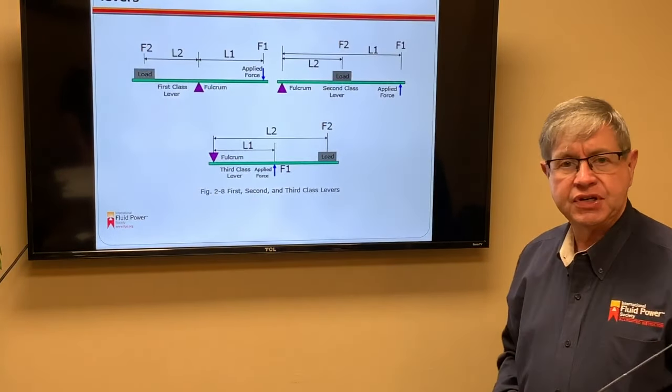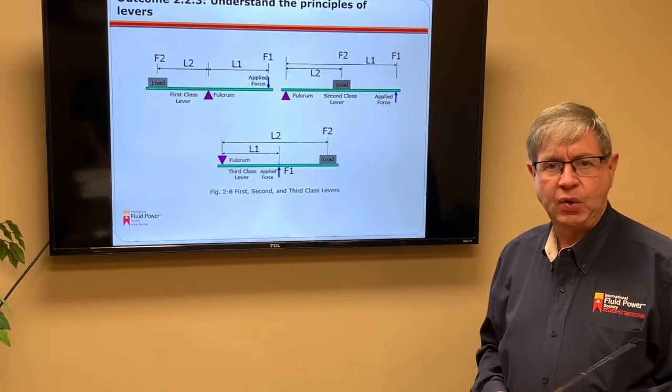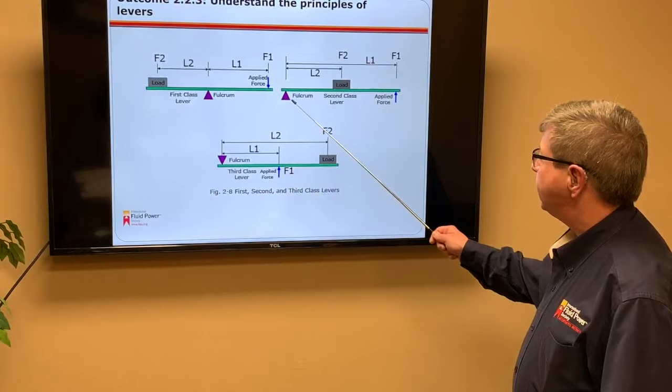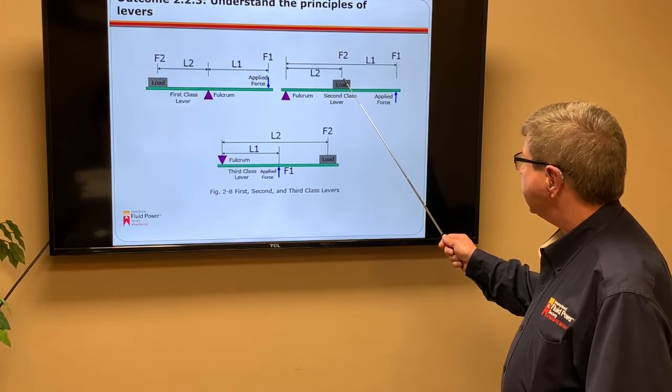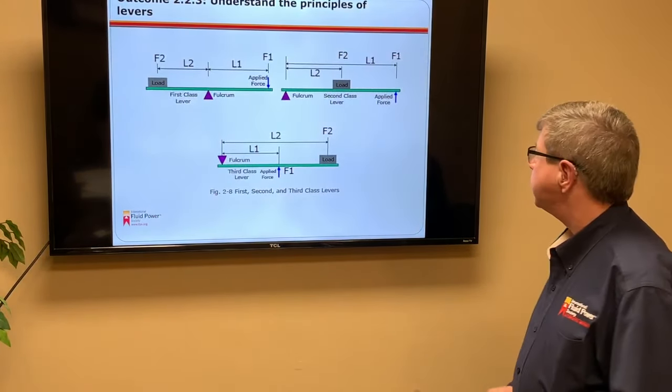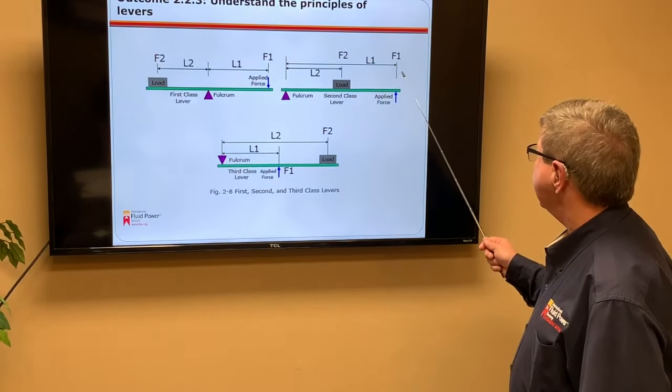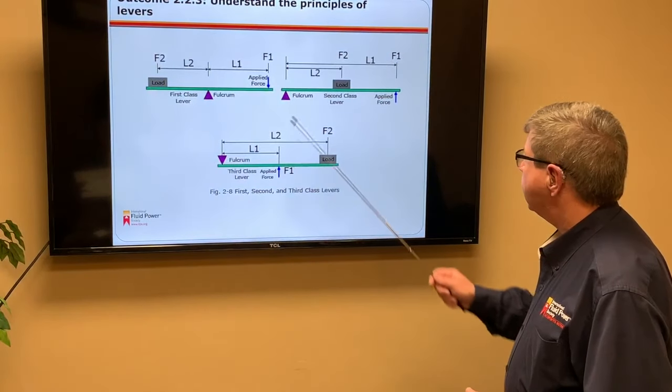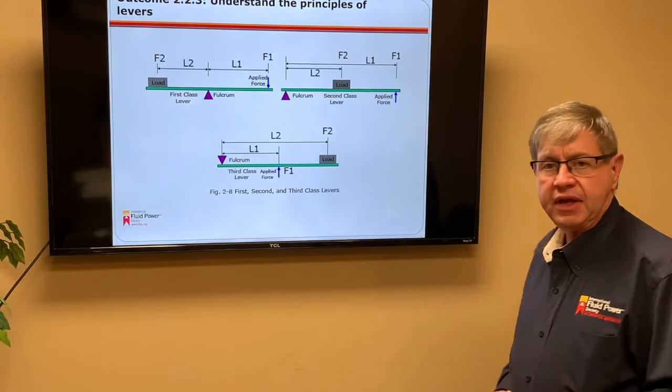Then we also have what is known as a second class lever, which is sometimes given a nickname of the wheelbarrow class of lever because of the nature of the operation, such that my fulcrum is out at this point, and then my load is at some point between the fulcrum point and the applied force, or F sub 1. Again, it's a summation of forces and efforts, so F1 times the distance L1 to the fulcrum point must equal the distance from the fulcrum point to the load, which is F sub 2.